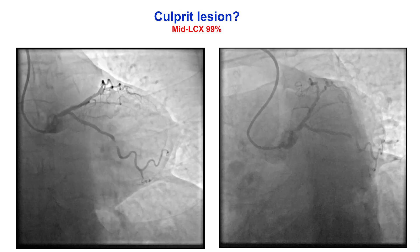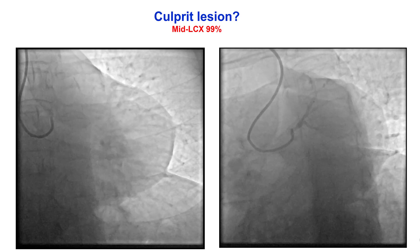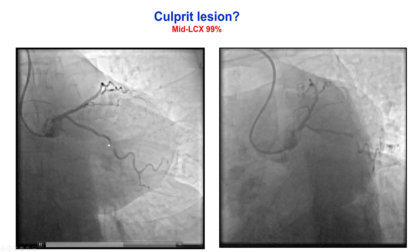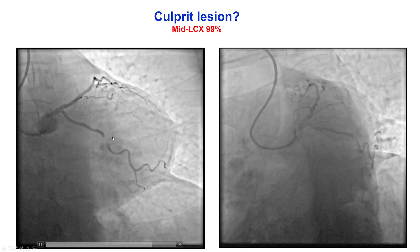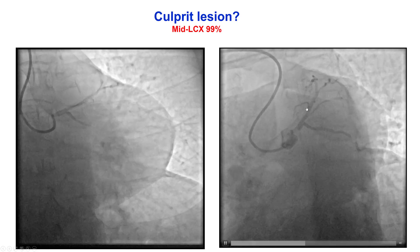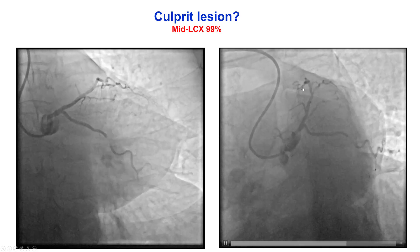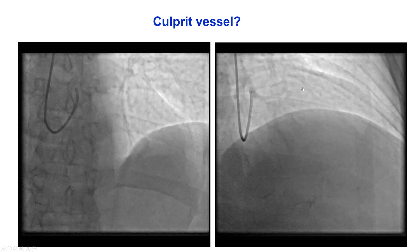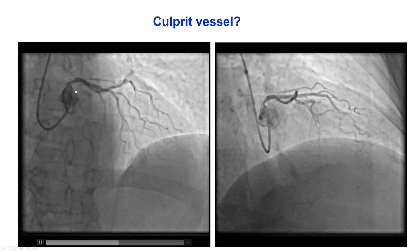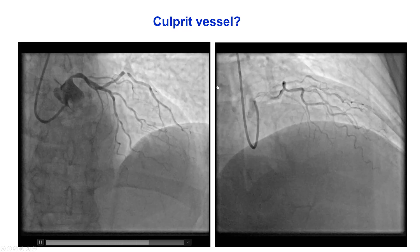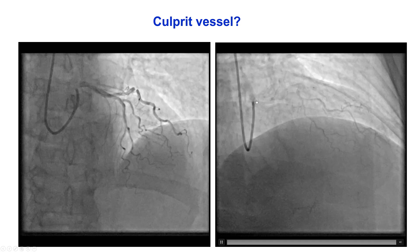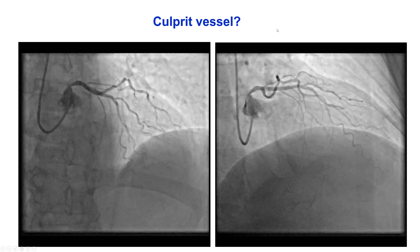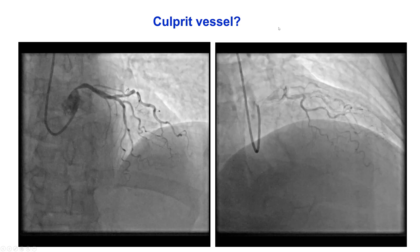Diagnostic coronary angiography demonstrated a severe lesion in the first obtuse marginal branch. There was no significant disease in the LAD or the right coronary artery. However, in different views, there appeared to be a lesion in the ostium of the left main.